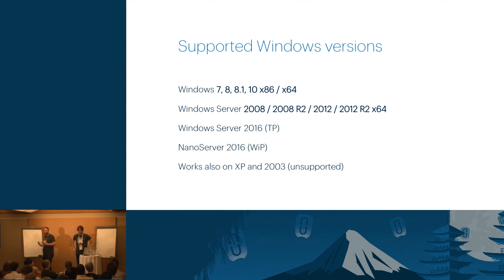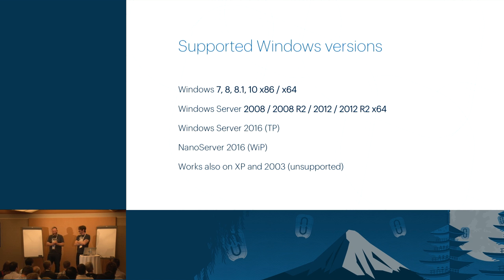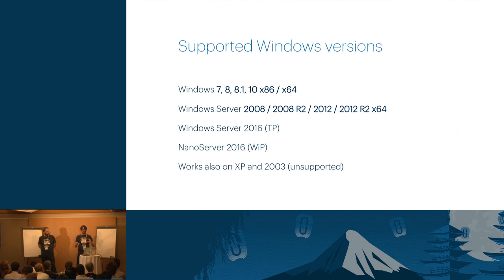Which supported Windows versions can you use with OpenStack today? From a Windows client perspective: Windows 7, 8, 8.1, and 10, both x86 and x64. Windows Server, all current platforms: 2008, 2008 R2, 2012, 2012 R2, x64. Windows Server 2016 Technical Preview, Nano Server 2016, and XP and 2003 also work. For Nano Server 2016, it fully supports Python 3 — we did a lot of work to make sure Python worked on Nano, meaning CloudBase-Init and the future cloud-init will work on both Python 2.7 and Python 3.